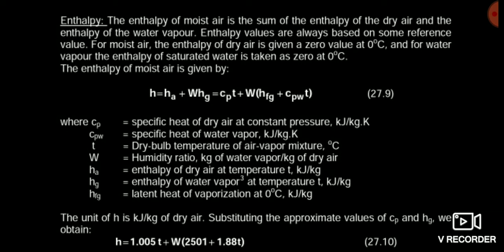Because moist air contains air plus water. Here W is the humidity ratio, HFG is the enthalpy of latent heat of vaporization — the amount of heat required to change the state of water to vapor. CpW is the specific heat of water vapor, and T is the temperature of the air-vapor mixture in degree Celsius. When we put the values of Cp, HFG, and CpW, we get the equation: H = 1.005T + W(2501 + 1.88T).